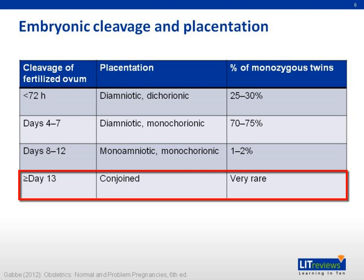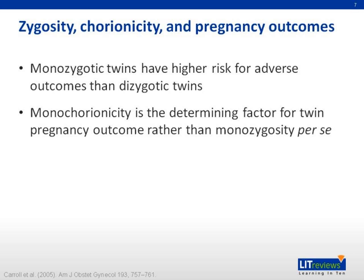It was previously thought that it was zygosity rather than chorionicity that dictated the risk for adverse outcomes in twin pregnancies. But it was later found that it was chorionicity, or the number of placentas, which dictates the outcome of the twin pregnancy more so than zygosity. And so monochorionic twin pregnancies are known to have a poorer outcome compared to dichorionic twin pregnancies.